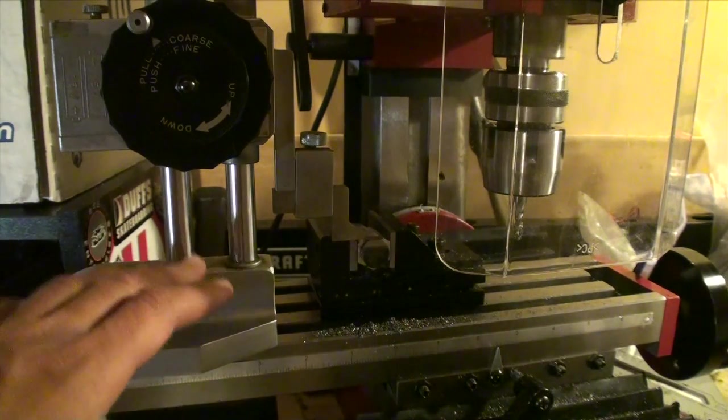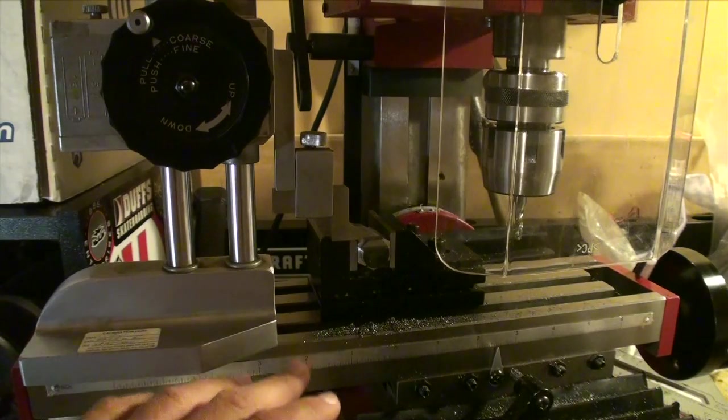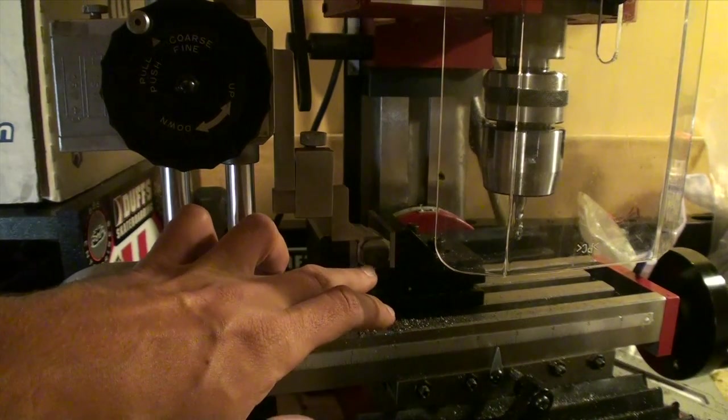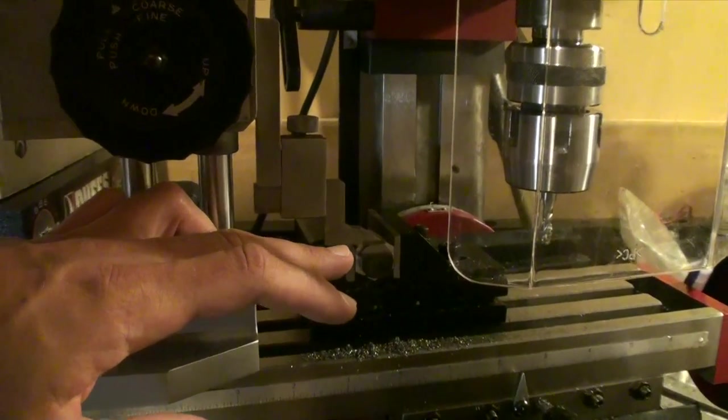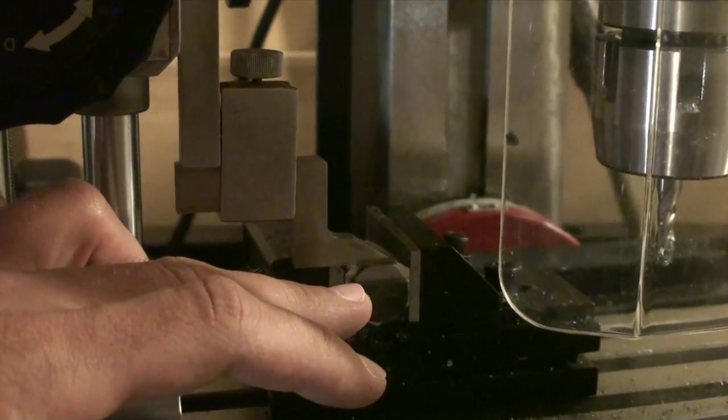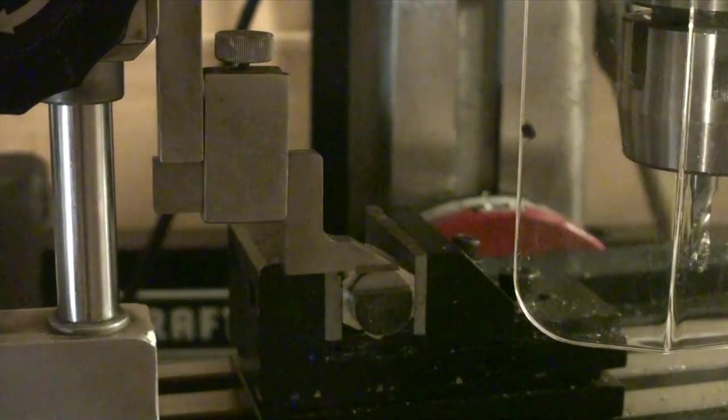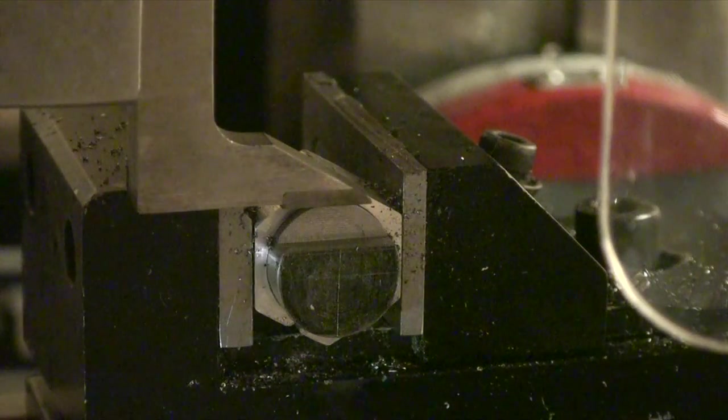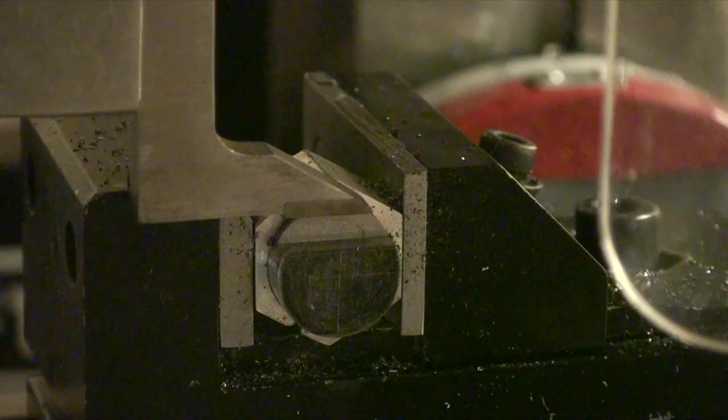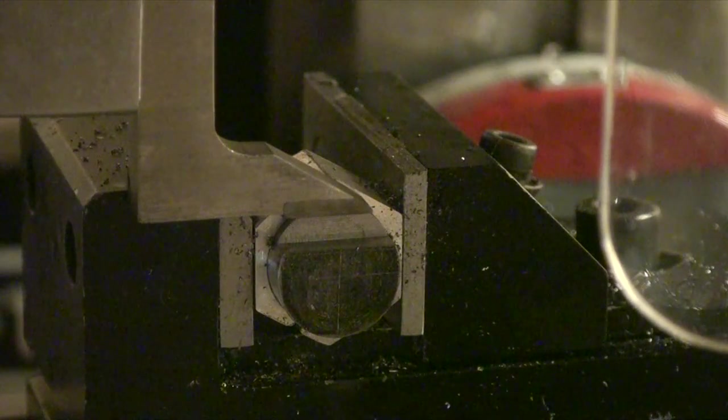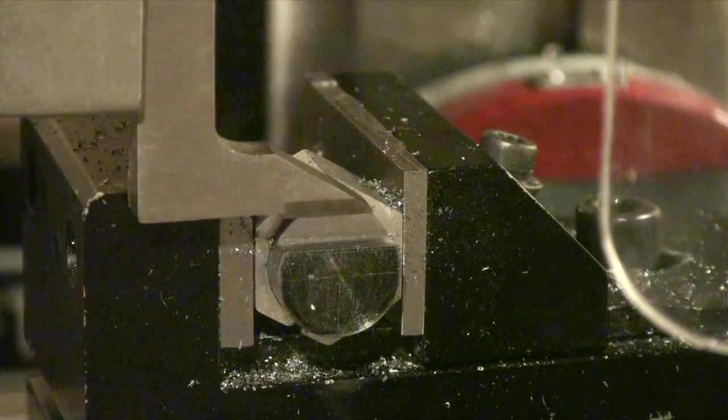So I have a height gauge on my mill, and I'm going to zero it on the top of my work piece, and then I'll be able to move it lower and get a reading of how much material I took off. So I'll just touch it off the top of my work piece, I'll zero it.